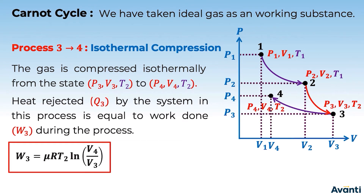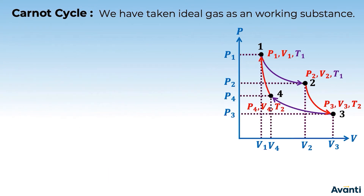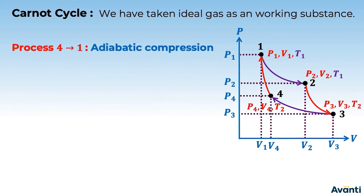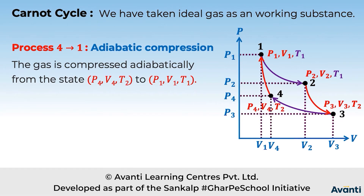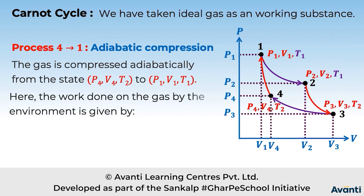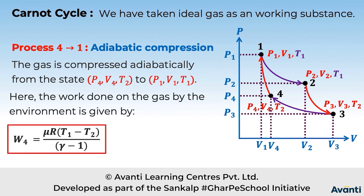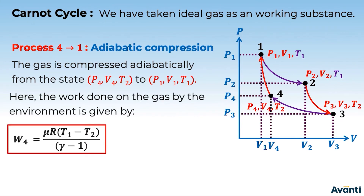The fourth step takes us from state 4 back to state 1 — it is an adiabatic compression. In this process, temperature changes, but it returns to the initial temperature T1 since we are completing the cycle. The work done here is the adiabatic work: μR(T1 − T2) / (γ − 1).